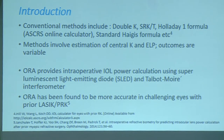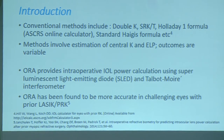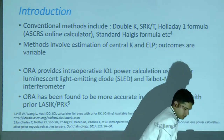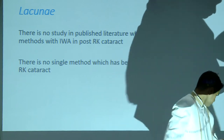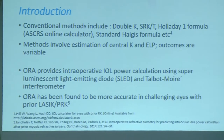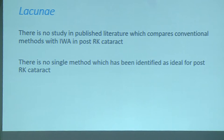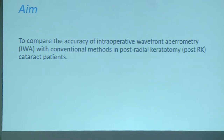Conventional methods for IOL power calculation include the double-K method, SRKT, Holladay 1 with ASCRS online calculator, and standard Haigis formula. These methods involve estimation of central K and ELP and outcomes are variable. ORA — Optiwave Refractive Analysis — provides intraoperative IOL power calculation using a SLED superluminescent light-emitting diode system and Talbot-Moiré interferometry, generating fringe patterns to find sphere, cylinder, and axis. It has been found more accurate in challenging eyes such as prior LASIK and PRK, but there is no published literature comparing conventional methods with intraoperative aberrometry in post-RK eyes.